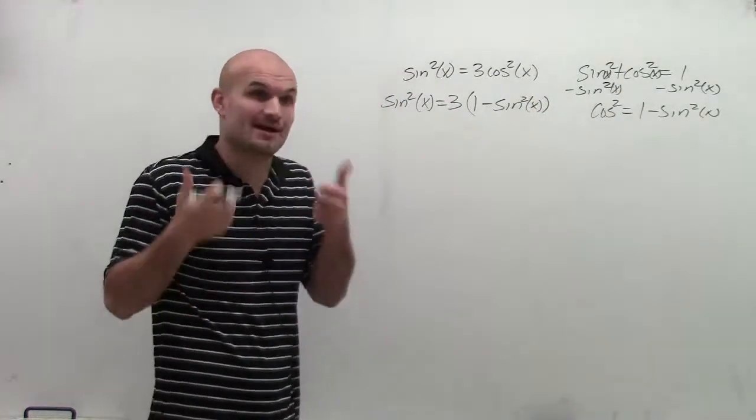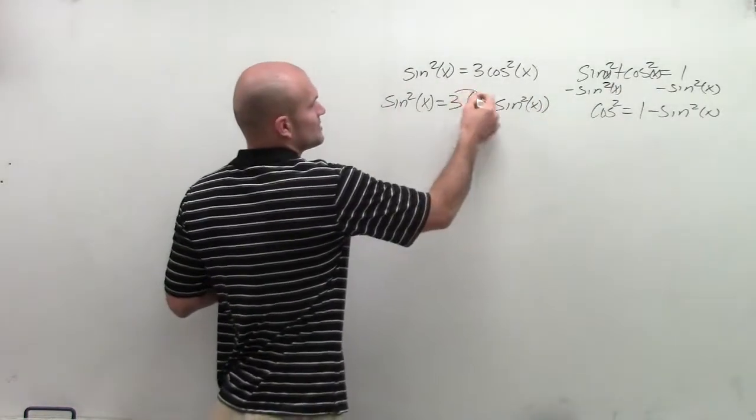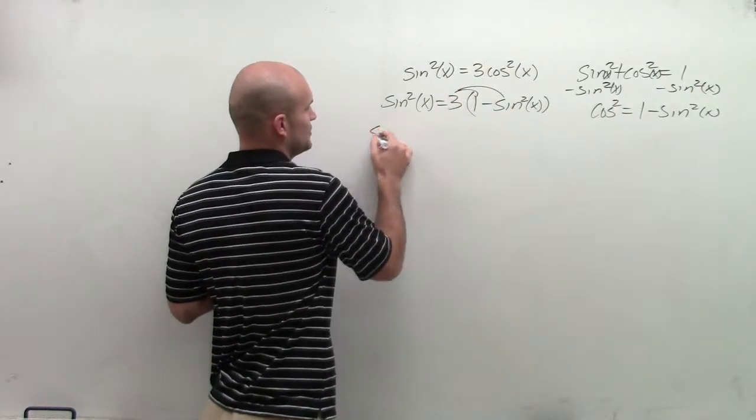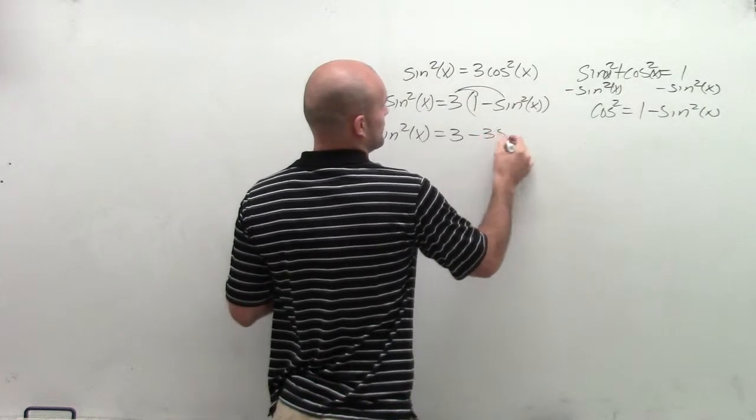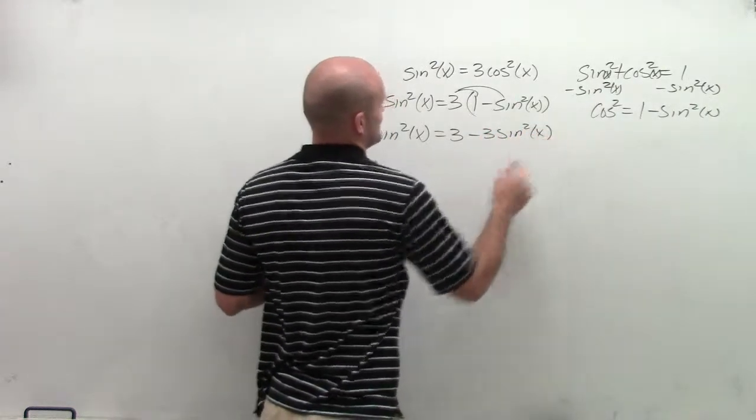OK, now I have sines on the same side, which is good. So now I need to multiply this through. So I have sine squared of x equals 3 minus 3 sine squared of x.